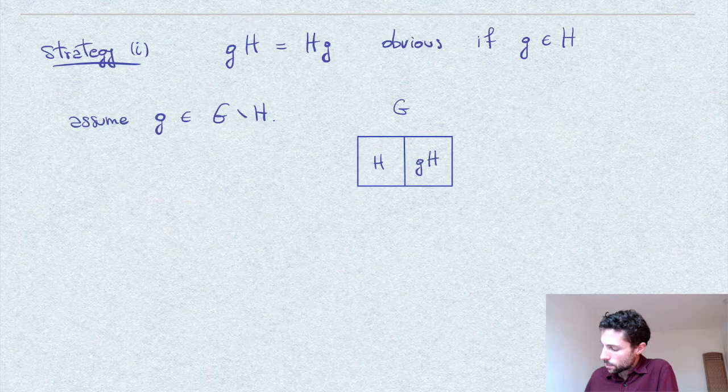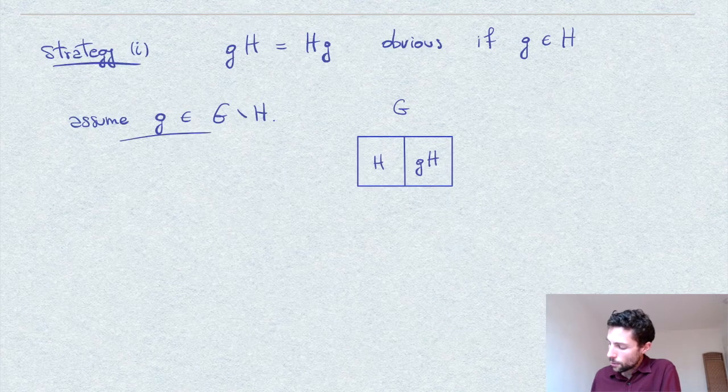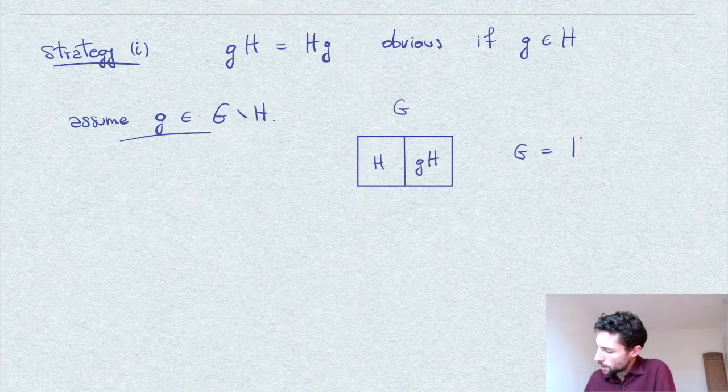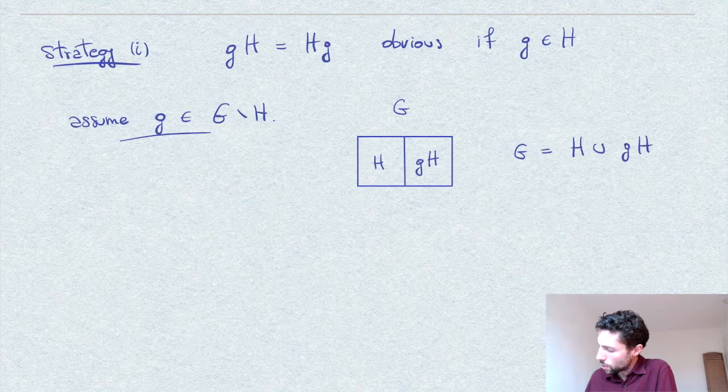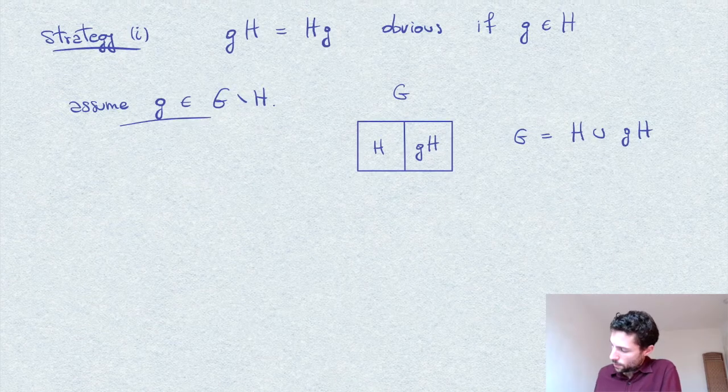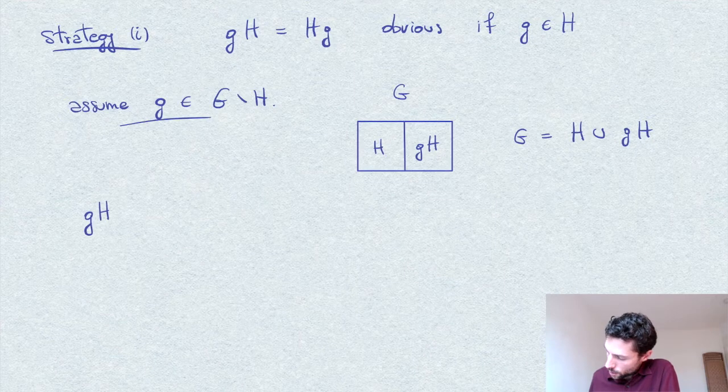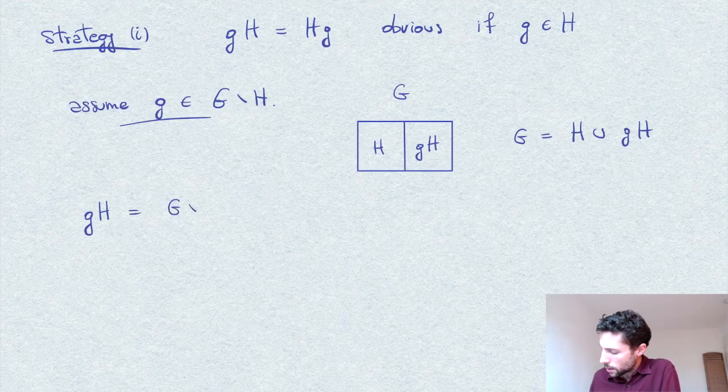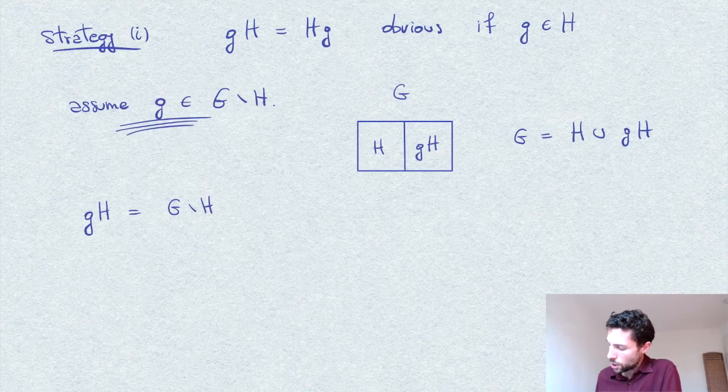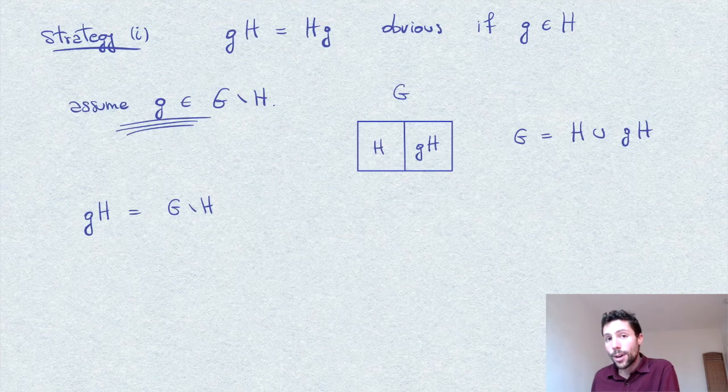For left cosets, this means that there is only another left coset, namely g times H for such g not in H. In other words, G can be written as a set as H union gH. So what we have proved here is that the left coset gH, which is equal to the complement of H, is equal to the complement of H for such a g.